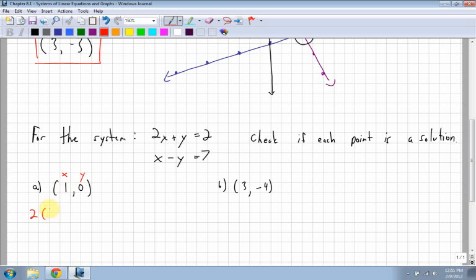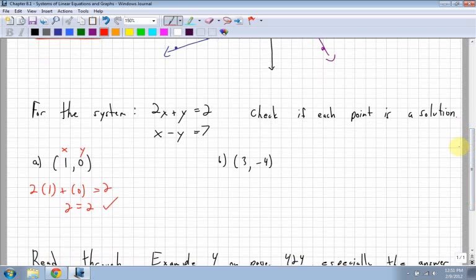So for the first one, I have 2, my x value is 1, plus my y value, which is 0, equals 2. Is this true? 2 times 1 is 2 plus 0, yep. So 2 equals 2, checks out. But we have to check both lines, because it can't just be on one line. That just tells me that that point is on that line. But is this point also on this line? Let's check it out. So we have the x value is 1. And my y value is 0, equals 7. Well, I can see right away 1 minus 0 does not equal 7. So my answer is no.